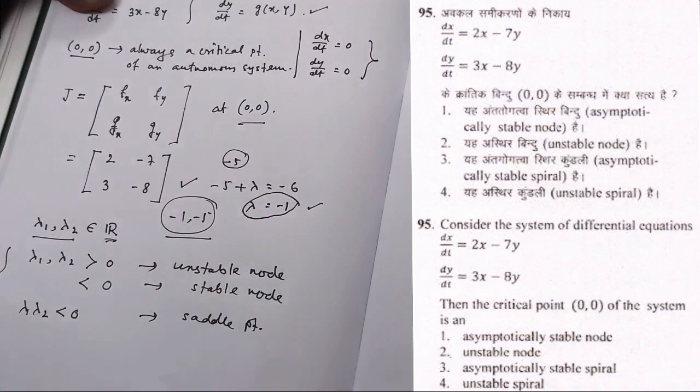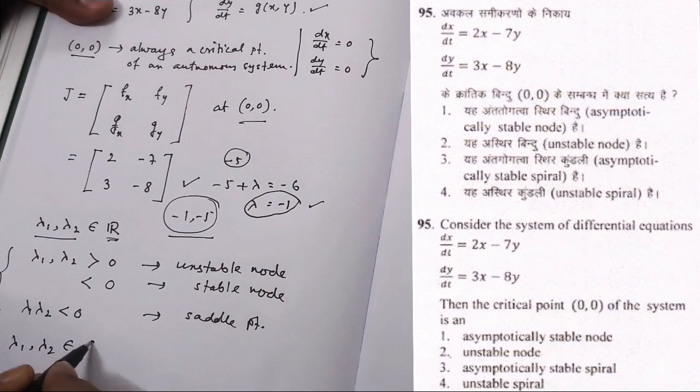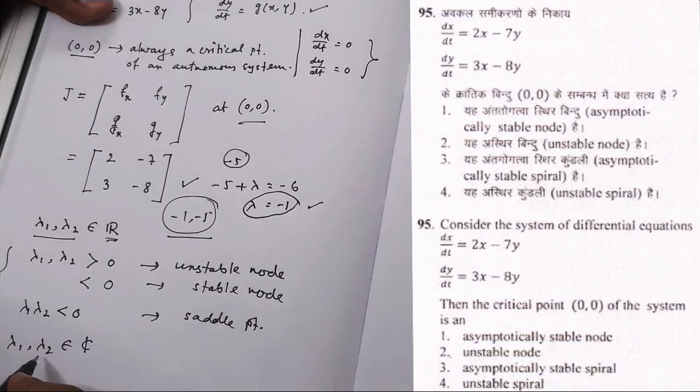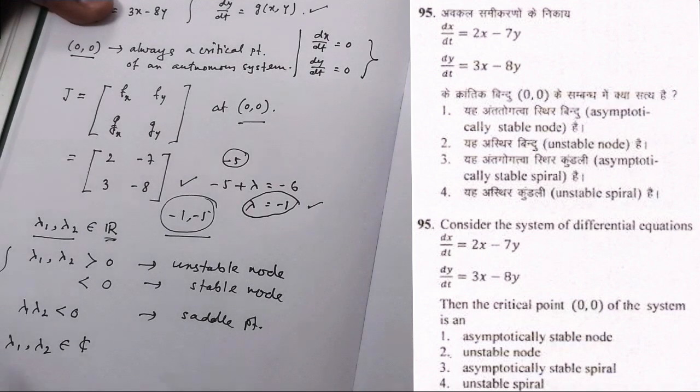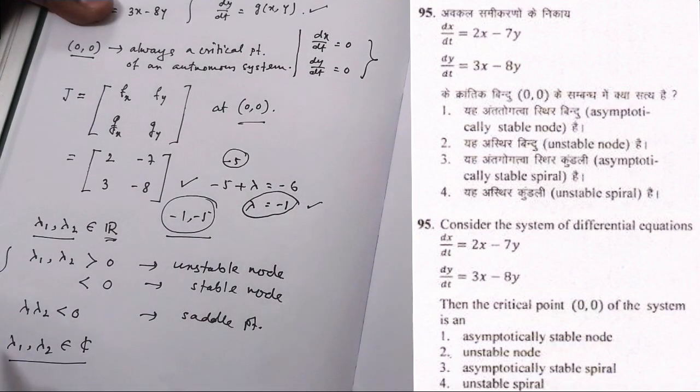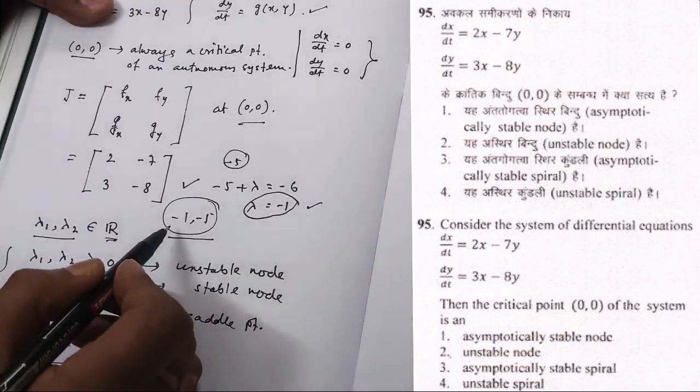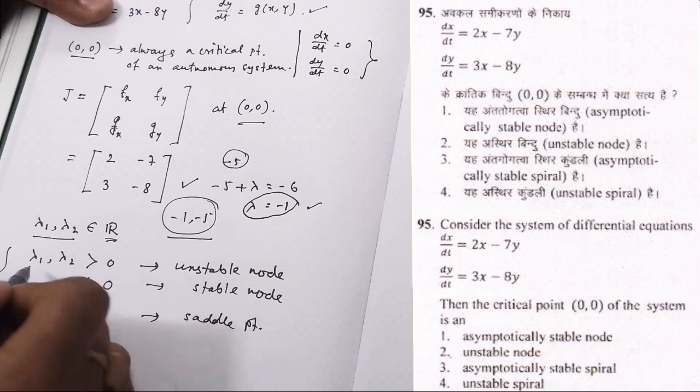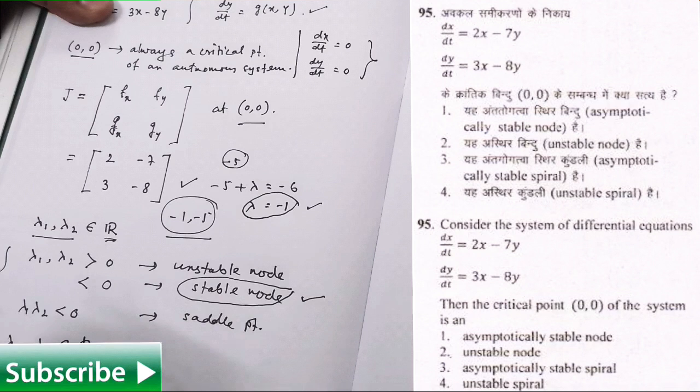These things we have to know, but if lambda 1 and lambda 2 belonging from C, that means complex numbers, if the eigenvalues are complex then we have to use a different kind of treatment. Similar kind of table we can construct from that point of view. So here what we are getting is lambda 1 and lambda 2 less than 0, both of them are less than 0. So this is our case, that means it will be stable node.